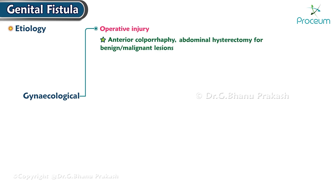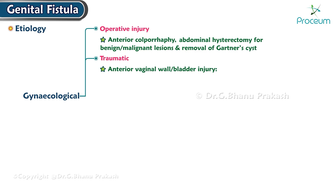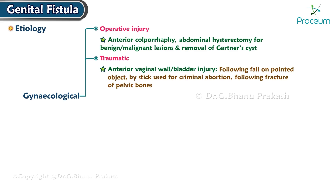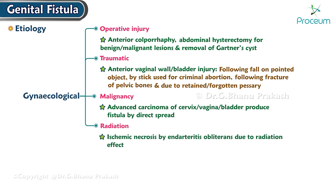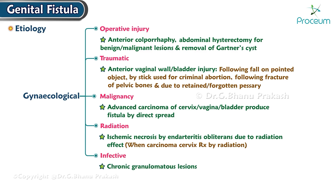Gynecological operative injury likely to produce fistula includes operations like anterior colporrhaphy, abdominal hysterectomy for benign or malignant lesions, or removal of Gartner's cyst. Traumatically, the anterior vaginal wall and bladder may be injured following a fall on a pointed object, criminal abortion, fracture of pelvic bones, or a retained and forgotten pessary. Advanced carcinoma of the cervix, vagina, or bladder may produce fistula by direct spread. Radiation may cause ischemic necrosis by endarteritis obliterans when carcinoma cervix is treated by radiation. Infective chronic granulomatous lesions such as vaginal tuberculosis, lymphogranuloma venereum, schistosomiasis, or actinomycosis may also produce fistula.